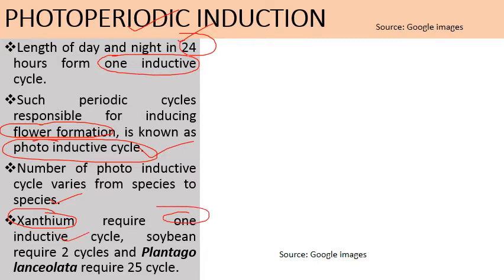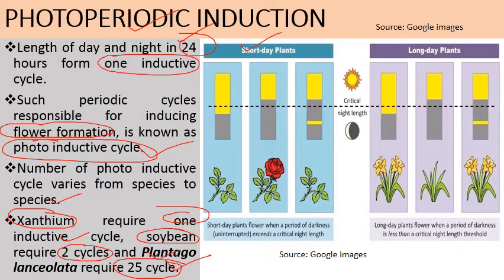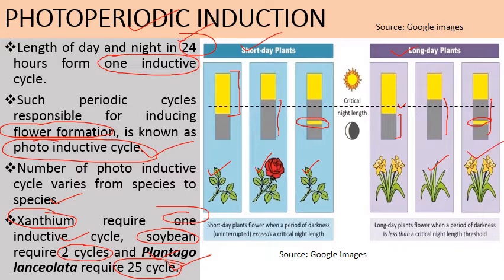Soybean, also a short day plant, requires two inductive cycles, while Plantago lanceolata requires 24 photo-inductive cycles to induce flowering. Short day plants require continuous long nights for flowering — when the long night is interrupted by a flash of light, the short day plant grows vegetatively. Long day plants require short nights, meaning day duration must be greater than the critical day length for flowering. When long nights are interrupted by a flash of light, long day plants are again able to show flowering.